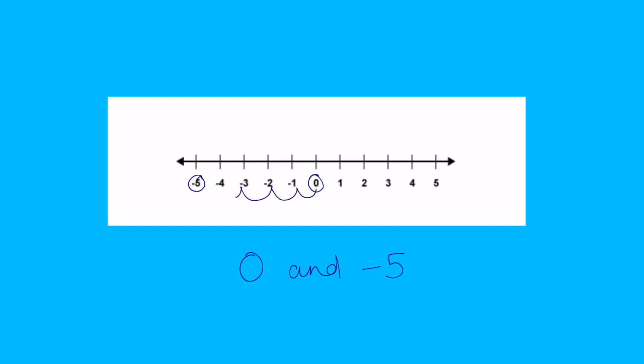So that's just as simple as counting along my number line. So 1, 2, 3, 4, 5. Minus 5 is 5 away from 0.